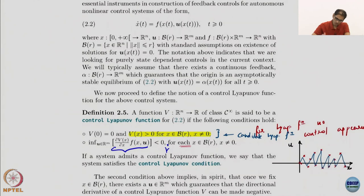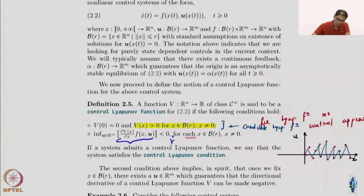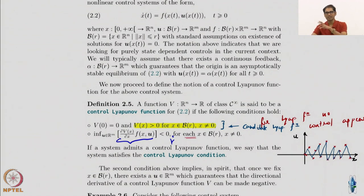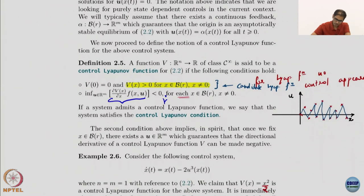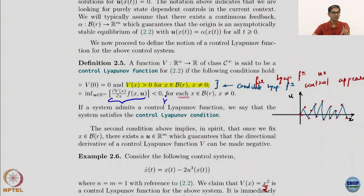We assume existence of solutions. One typical assumption we also make is that there exists a continuous feedback which guarantees that the origin is asymptotically stable. We do not use this immediately, so let us not worry about it too much for now. We assume the existence of a stabilizing feedback. In our discussion we will actually be talking about when such a feedback exists. The control Lyapunov function V is still a purely state-dependent function — just like in the LaSalle invariance discussion, time does not explicitly appear on the right-hand side.